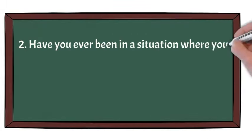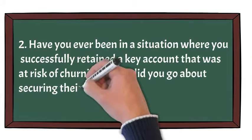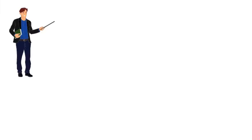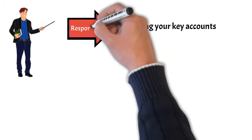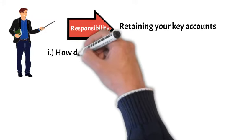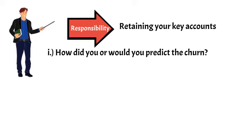Question number 2: Have you ever been in a situation where you successfully retained a key account that was at risk of churning? How did you go about securing their continued partnership? Retaining your key accounts is another important responsibility of an account manager. Before you can take any actions to retain the account, you need to be able to predict the churn in the first place. Answer this question in two parts: how did you predict the churn, and what actions did you take to prevent it.